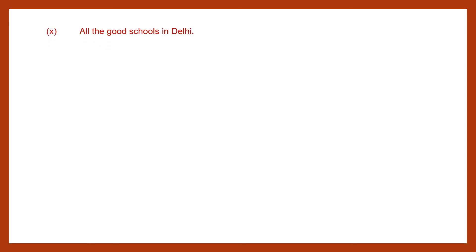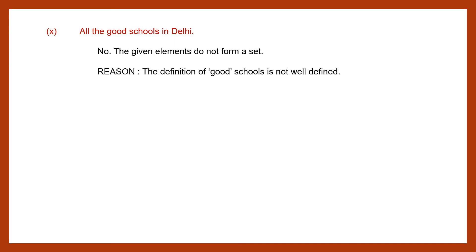Question 10: all the good schools in Delhi. Again, it's not well defined — we do not know exactly what is meant by good schools, unless we give a specific value and say schools that have these features, these benefits, these facilities. Since it's not clear, these elements do not form a set. The reason is the definition of good schools is not well defined.